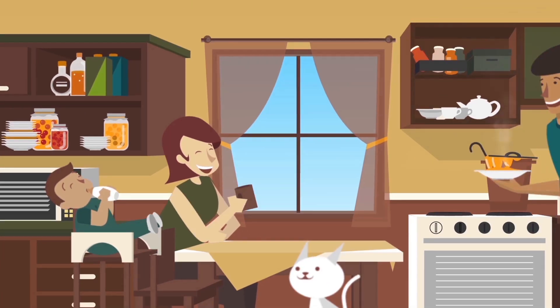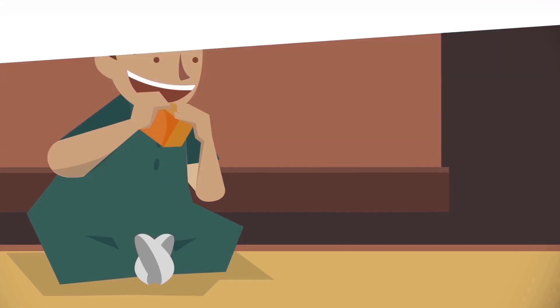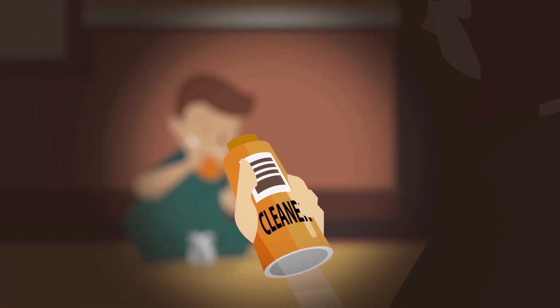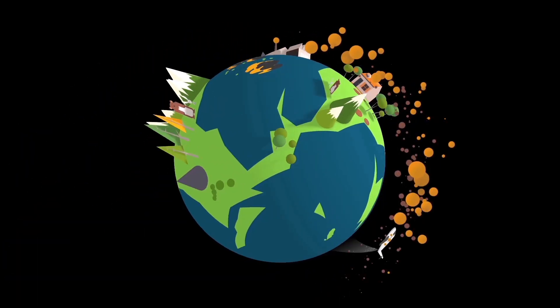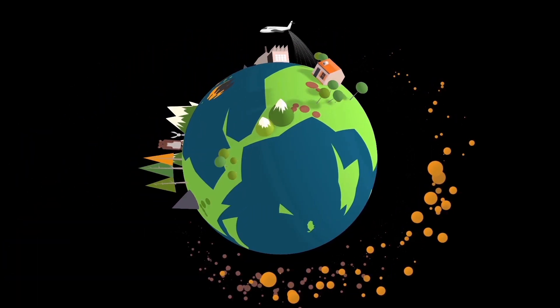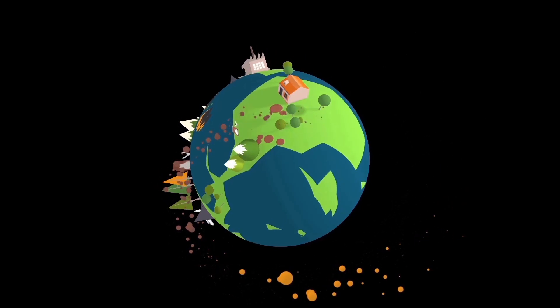Chemicals are in just about all of the products we use. We need to understand their risks. Today, thousands of chemicals are circulating in the environment, and for most, we don't know exactly how they affect people or other life on our planet.